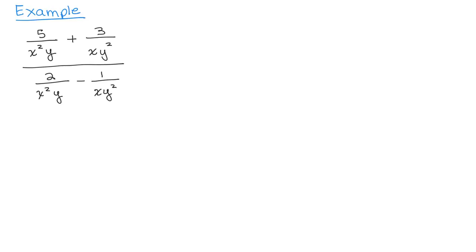We're going to use method two to do this example because we have more than one term in the numerator or denominator, in fact, in both. We're going to have to multiply both the numerator and denominator of the complex fraction by the least common multiple of all the denominators.